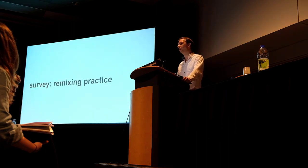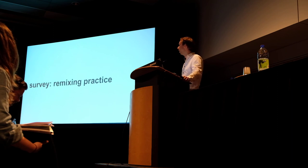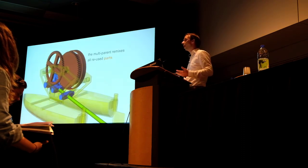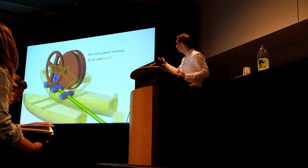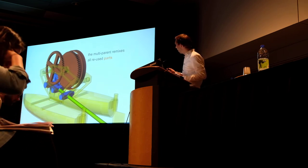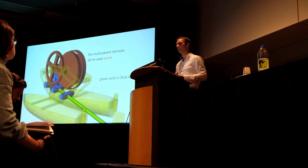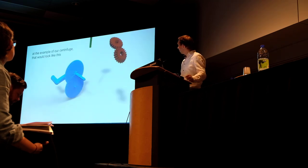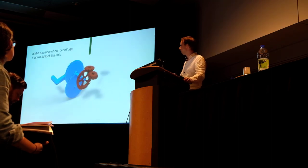To understand this, we started by looking at common maker practice — what people are doing right now. We downloaded 349 models from the Thingiverse Remix Challenge and investigated how these models have been remixed. Here's one reasonably complicated remix. The different colors refer to the different source models. You can see that a green axle is fitting in a blue bearing, and it's only fitting because the person changed the size of the dimension until it fit properly.